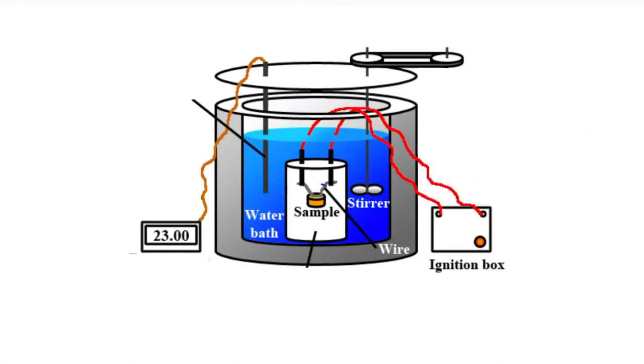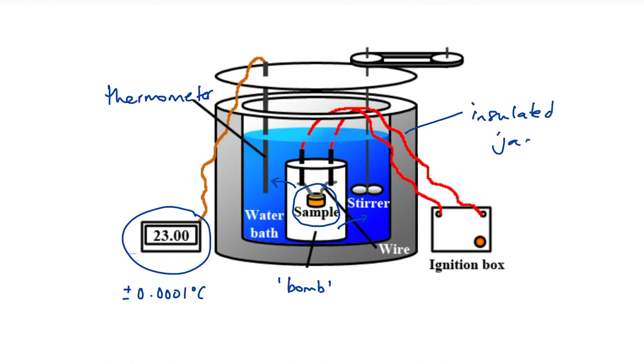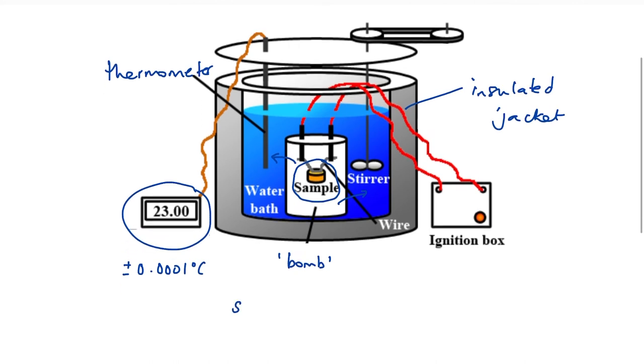In a bomb calorimeter, our fuel or the sample, whatever we're combusting, is placed in what they call a bomb. And this is built from steel. It's designed to withstand great pressures. So the volume remains constant during the experiment. We have a thermometer and it's a digital thermometer. So we get a very, very precise reading that we can read it to plus or minus 0.0001 degree C. When the sample is combusted, heat is transferred into the water. The water is stirred, so we get an even temperature rise. And the water itself is inside an insulated jacket, so that we are doing everything possible to minimize heat loss.